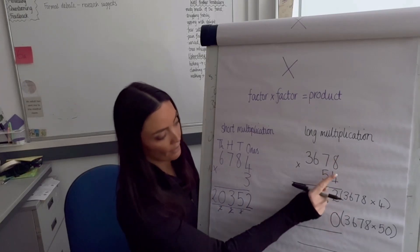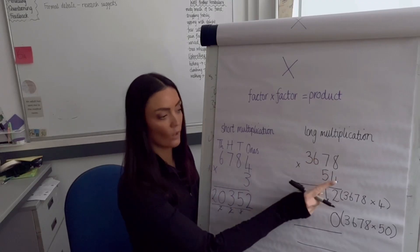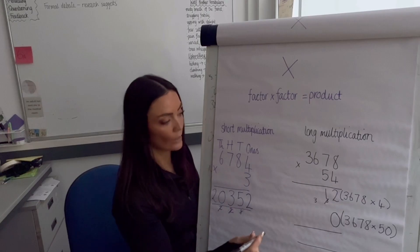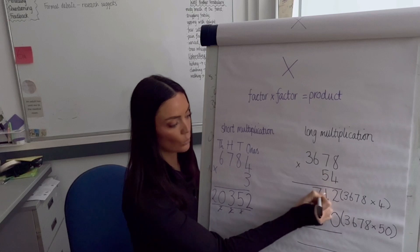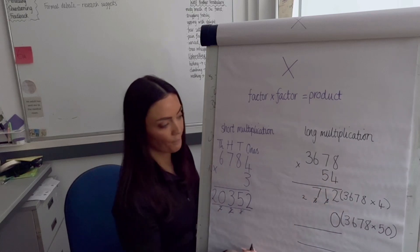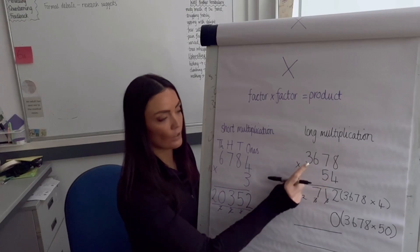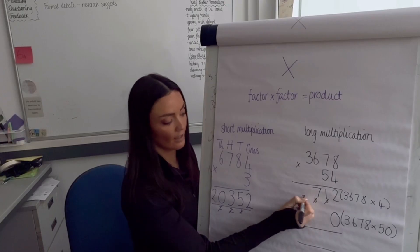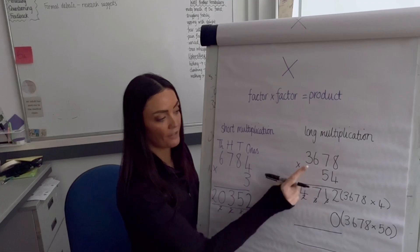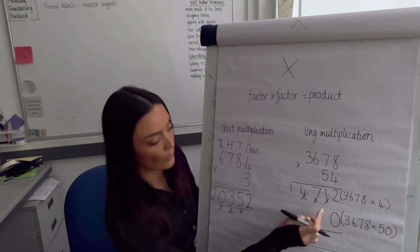Next, 4 times 6 hundreds equals 24 hundreds, plus the 3 hundreds already exchanged equals 27 hundreds. Then 4 times 3 thousands: 4 × 3 = 12, so 12,000 plus the 2 thousands underneath equals 14,000. There's nothing more to multiply by the 4, so we're finished on that row. Keep everything nice and in line.